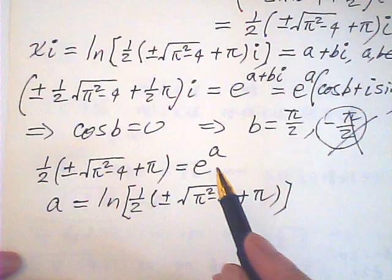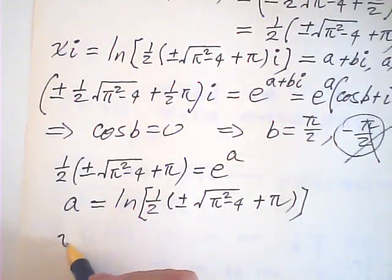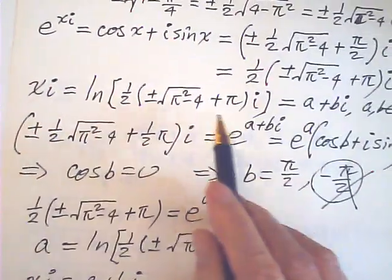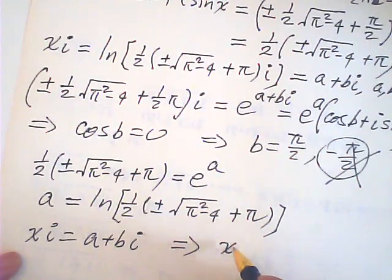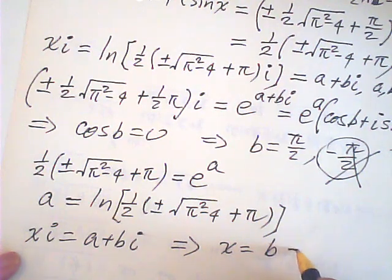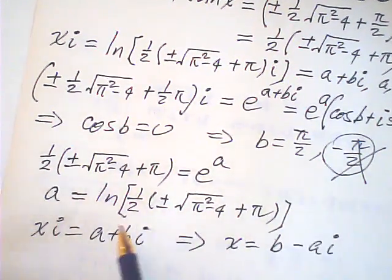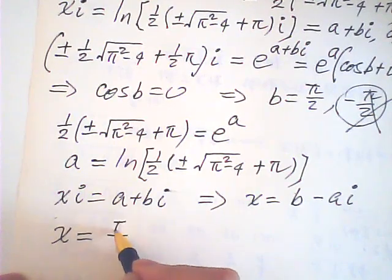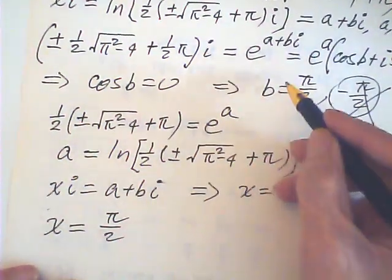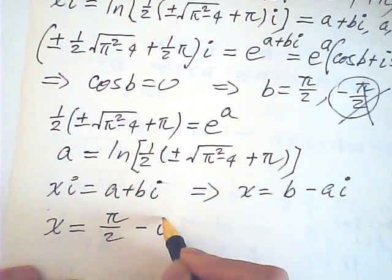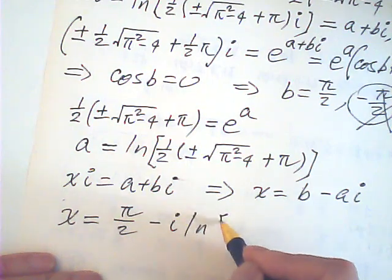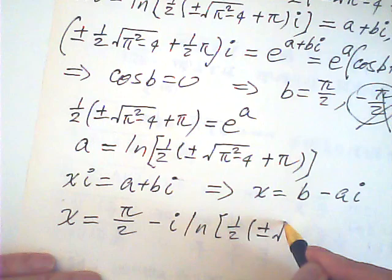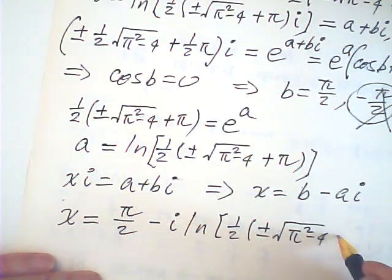Because xi is equal to a plus bi, x is equal to b minus ai. Now we know b, we know a. So x is equal to one half pi, that is b, minus i times natural log of one half times plus or minus square root pi squared minus 4 plus pi.